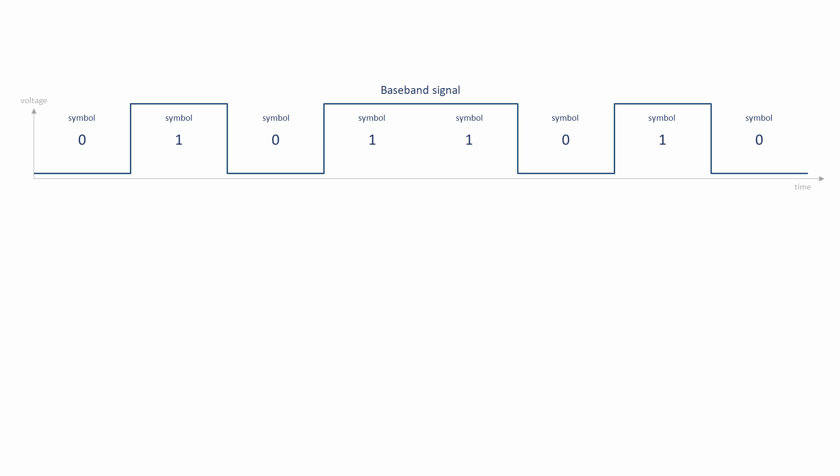Before the baseband signal can be transmitted via radio, it must be modulated. It needs to be converted into a form that can be radiated by an antenna. It also has to fall within a particular frequency range in order to comply with the law.